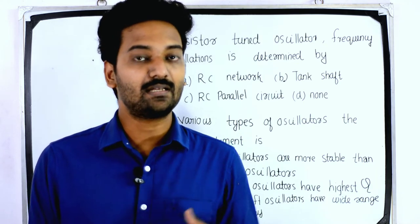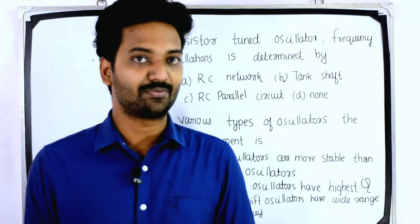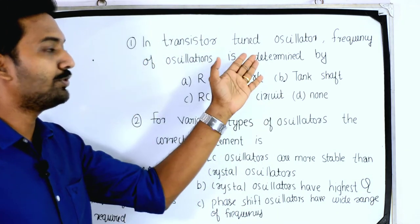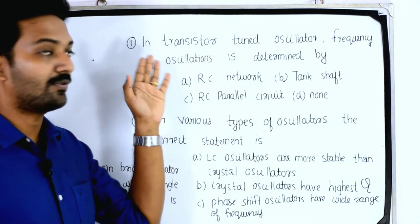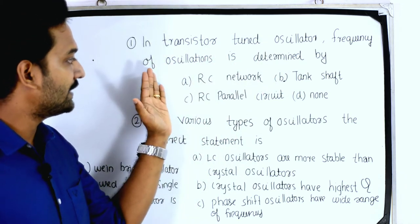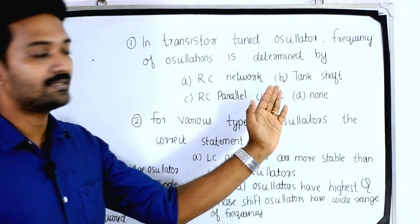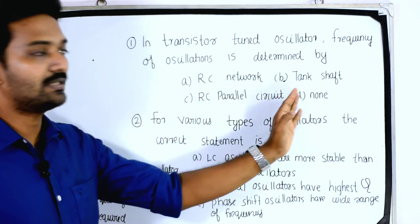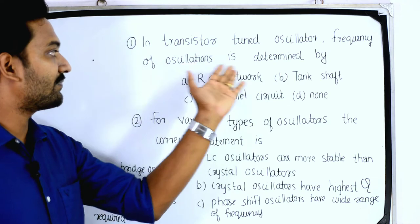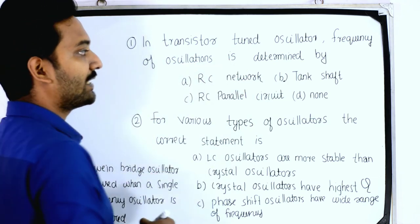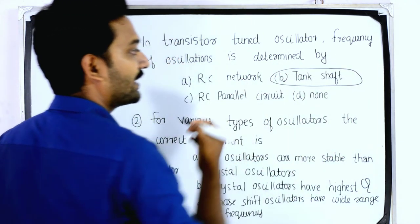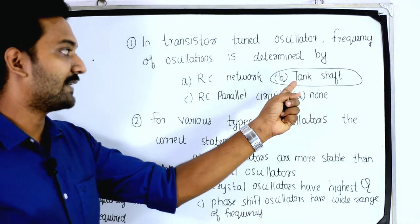The first question is: in a transistor-tuned oscillator, the frequency of oscillation is determined by — option A: RC network, option B: tank circuit, option C: RC parallel circuit, option D: none of these. The answer is option B, tank circuit.